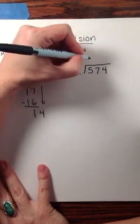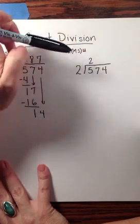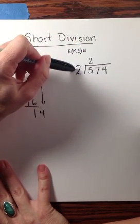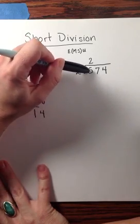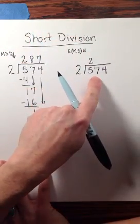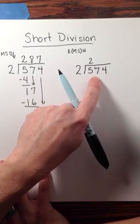2 would still fit into 5 two times. You do the 2 times 2 equals 4 in your head, and subtract 4 from 5, also in your head, and then write the remainder of 1 up here next to the 7, just like we carry when doing addition problems.